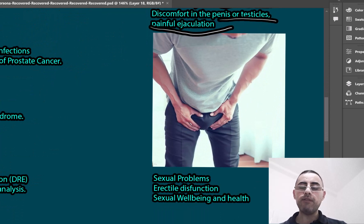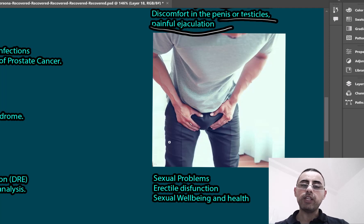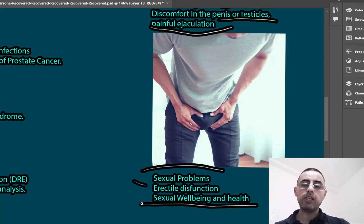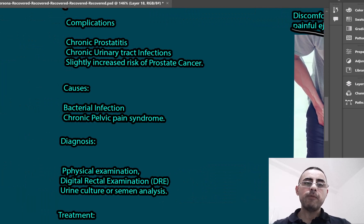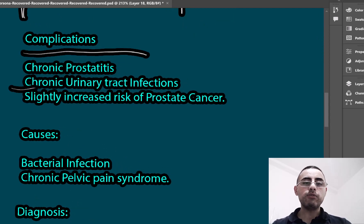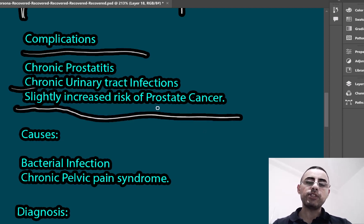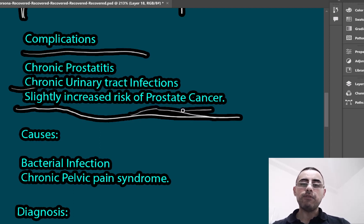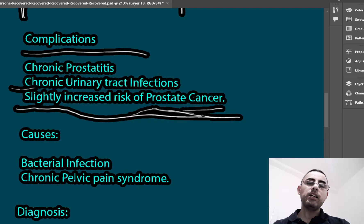Prostatitis primarily affects male sexual health and is an important problem. It is usually difficult for males to talk about these issues. It causes sexual problems including erectile dysfunction and affects overall sexual well-being. Potential complications include chronic prostatitis, chronic urinary tract infections, and chronic prostatitis slightly increases the risk of prostate cancer, though this correlation is not well understood and the evidence is weak.